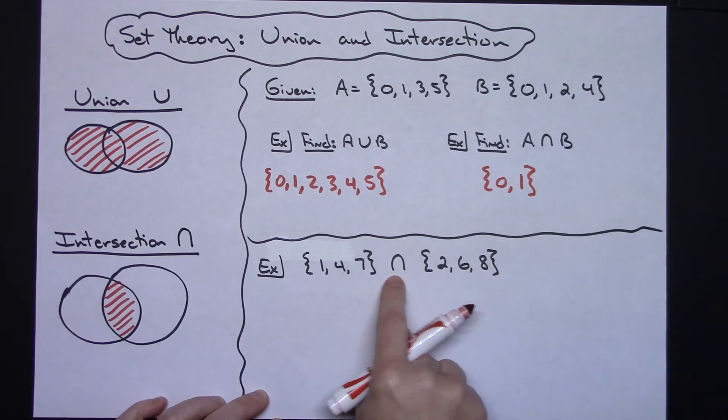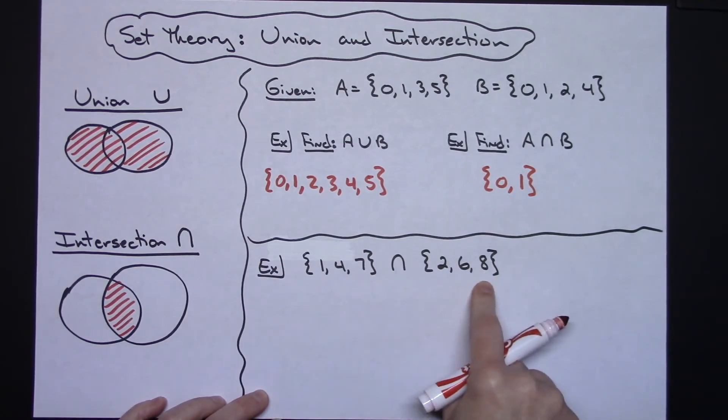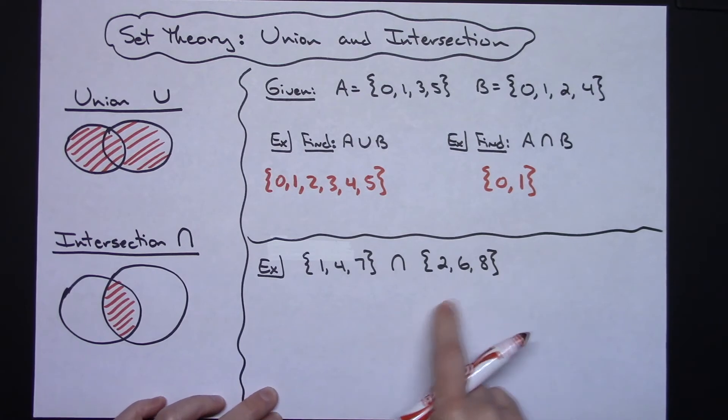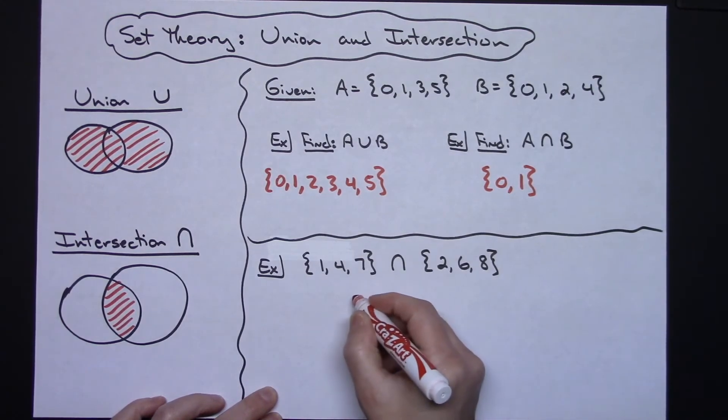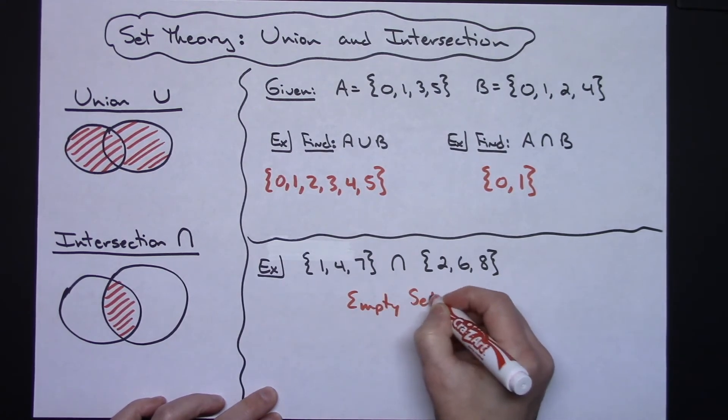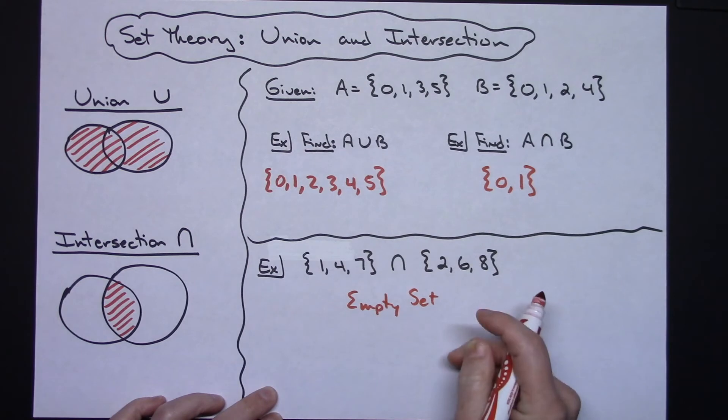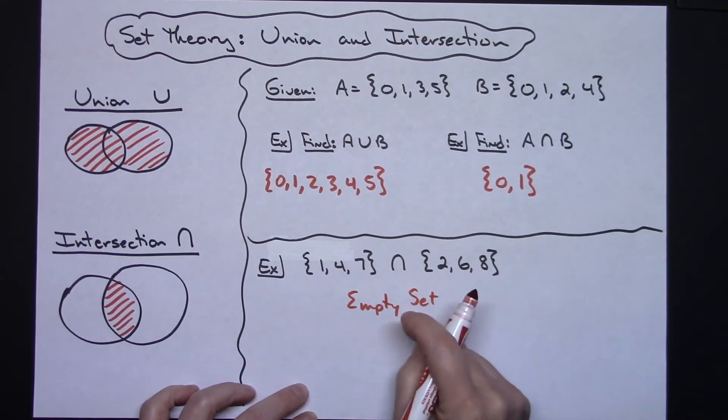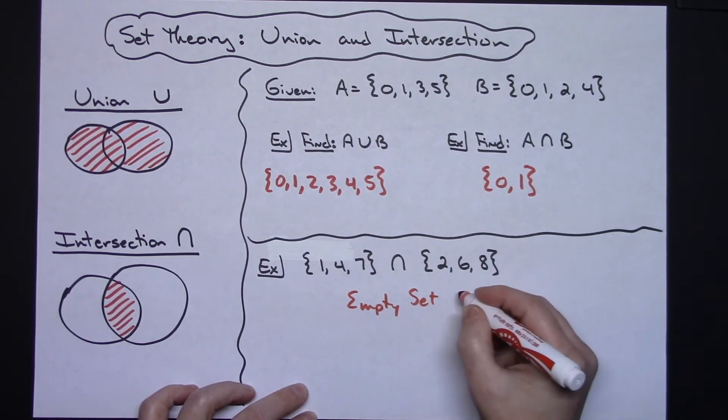So intersection—the numbers that would be duplicated in both sets. Well, in this scenario I do not have any, so this is considered to be what's called the empty set, because there are no elements in this set which fulfill the intersection.